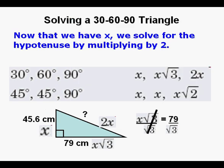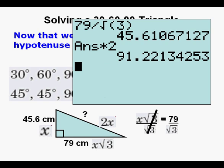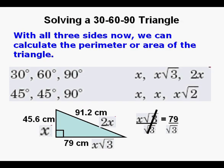Now that we have x, we solve for the hypotenuse by multiplying 45.6 times 2. We get hypotenuse equal to 91.2. With all three sides now, we can calculate the perimeter or area of the triangle.